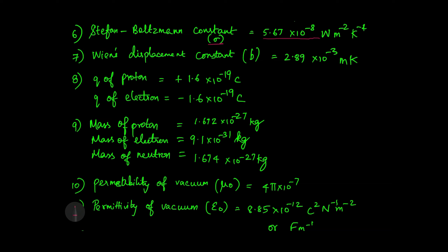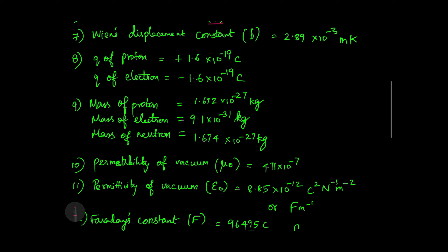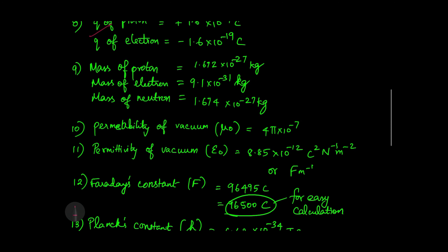Wien's displacement constant is represented by B, and its value is 2.89 × 10 power minus 3 meter kelvin.